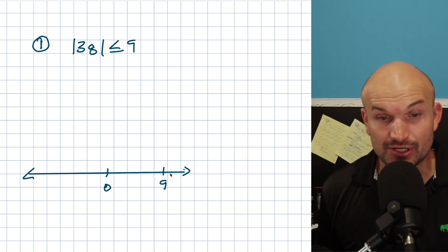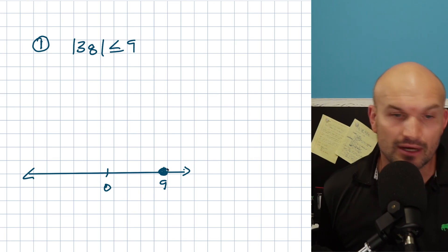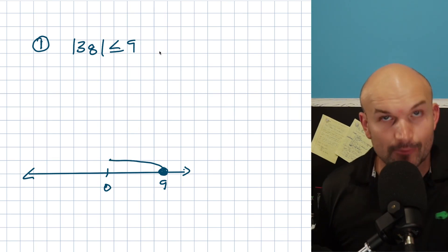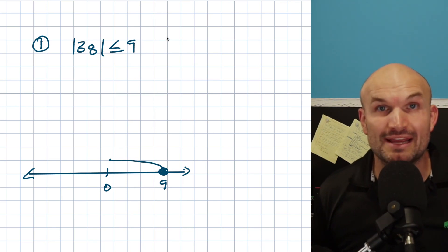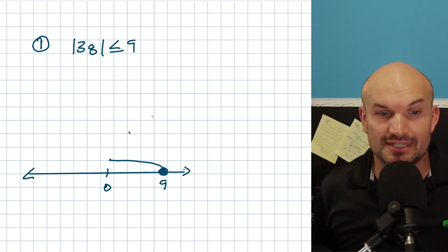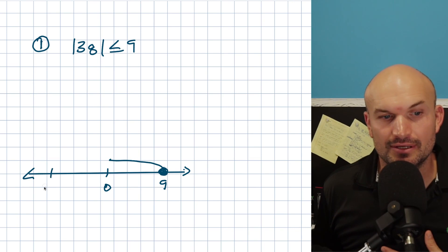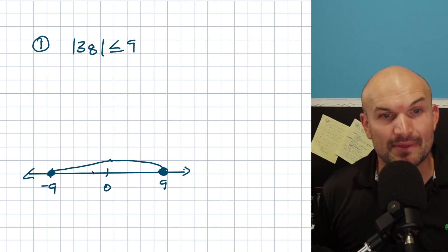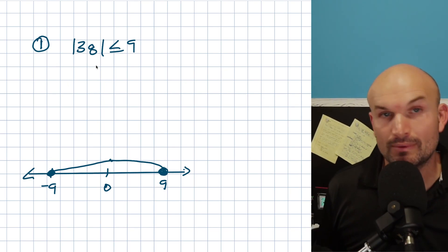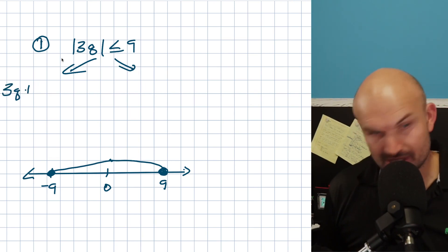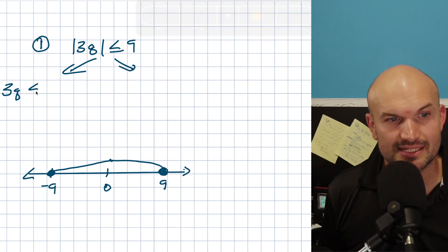It's going to be less than or equal to, and since we don't know the value of q, that's going to be a filled-in dot. Anything less than 9 here is going to be going in this direction. Remember, the absolute value represents the distance away from 0. So basically what this is saying is the absolute distance away from 0 has to be less than or equal to 9. That can be in the positive as well as the negative direction. So I can also go from negative 9 over here — any distance away from 0 that's less than 9 is going to be going in this direction.